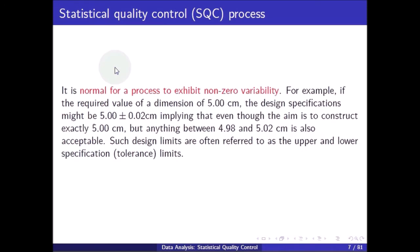It is normal for a process to exhibit non-zero variability. For example, if the required value of a dimension is 5.00 cm, the design specification might be 5.00 ± 0.02 cm, meaning that even though the aim is to produce exactly 5.00 cm, anything between 4.98 and 5.02 cm is also acceptable. Such design limits are often referred to as the upper and lower specification or tolerance limits.